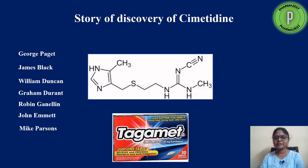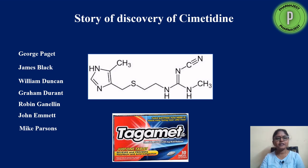Hi everyone, welcome to Pharmagest. I'm Dr. Haimavati. In the present video we will be discussing the story of Cimetidine. Cimetidine is a H2 receptor antagonist which is used for the treatment of peptic ulcers. This is the structure of the Cimetidine molecule and it is sold under the brand name Tagamet. The names on the left side of the screen are the scientists involved in the discovery of the Cimetidine molecule.